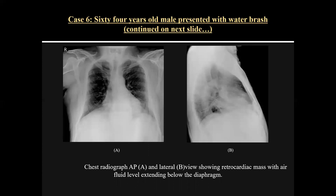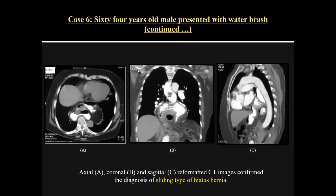Case six was a 64-year-old male presenting with waterbrash. On chest radiograph in PA and lateral view, there was a retrocardiac mass with an air-fluid level extending below the diaphragm, suggesting hiatal hernia. On CT in sagittal, coronal, and axial scan, it was confirmed as a sliding-type hiatal hernia, where the gastroesophageal junction is above the dome of the diaphragm.